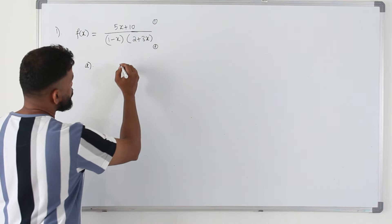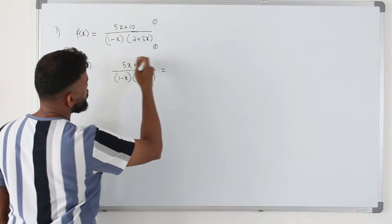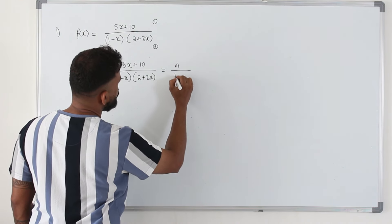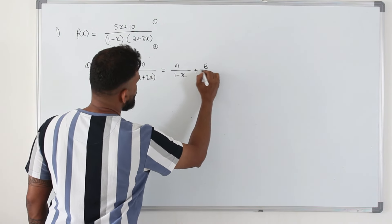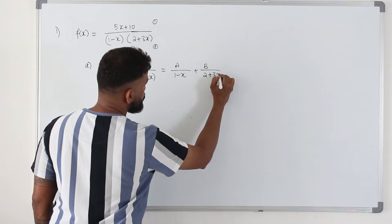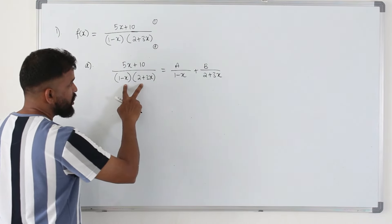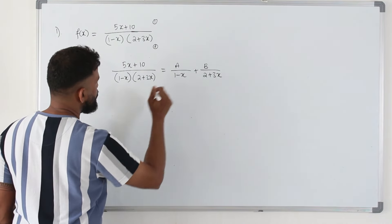1 over 2 is a proper fraction. So if it's a proper fraction, you can write the constant for every factor. b over 2 plus 3x. And then take this denominator, multiply both, bring it here.